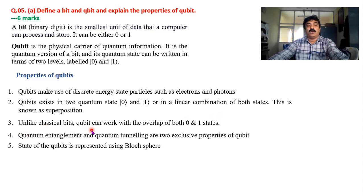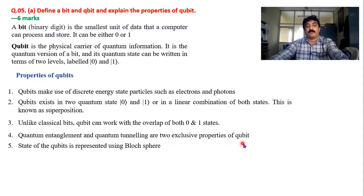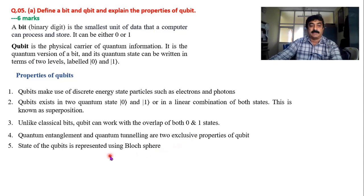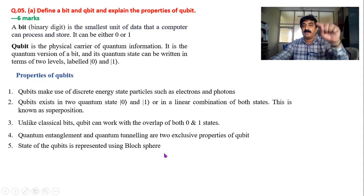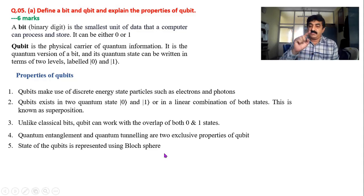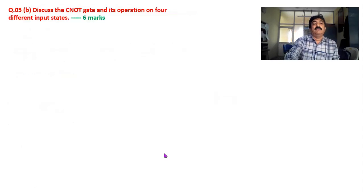Unlike classical bits, a qubit can work with the overlapping of zero and one — it can work with the combination of zero and one also. Quantum entanglement and quantum tunneling are two exclusive properties of qubits. Next, the state of a qubit can be represented using an imaginary sphere called the Bloch sphere, which I have already explained in my previous model paper discussion.